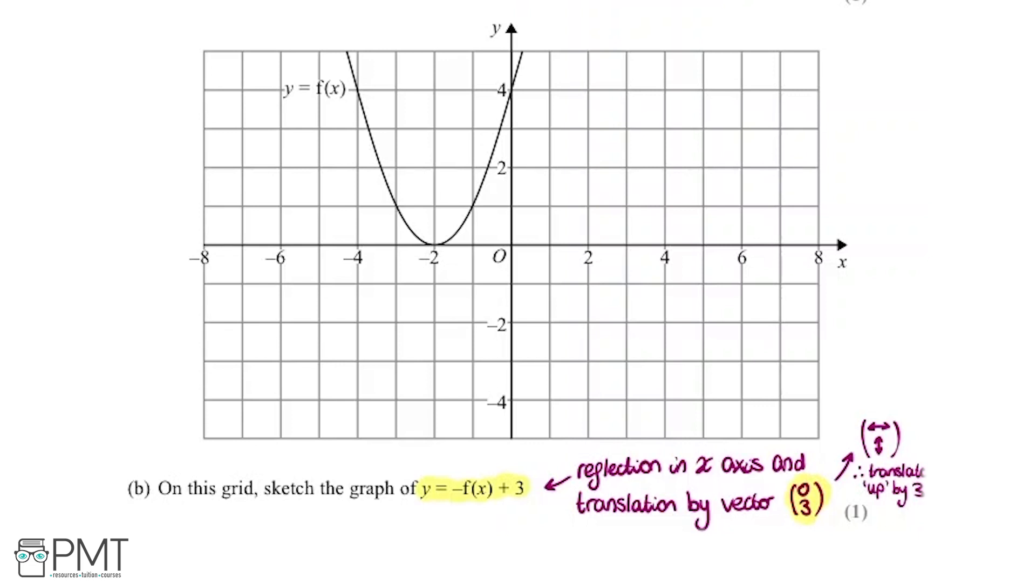So again, like last, I'm going to look at some points. So starting off with this one, if we reflect it in the x-axis, it's going to be the same point. Then up by 3, so 1, 2, 3. So there we go. So I'm going to mark a point on there. I'm just going to have a look at this one now. So if we reflect in the x-axis, we're down to here, and up by 3, 1, 2, 3, so we're in this point here.